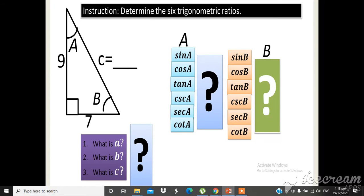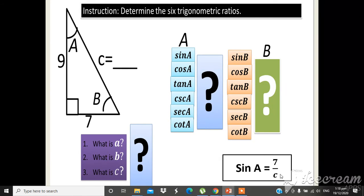So if we are going to find the value, if we are to find the equivalent trigonometric ratio sa sine angle A, it is already, diba, tong gingon ni Earl ganina, sine A is equal to 7 over C. Since the value of C is 11.40, so ang equivalent trigonometric ratio now sa sine A is equal to 7 over 11.40. Na-gets? Na-gets ang all? Na-gets ang concept?